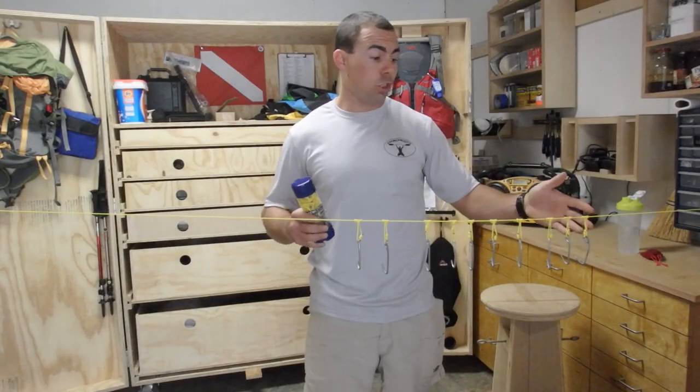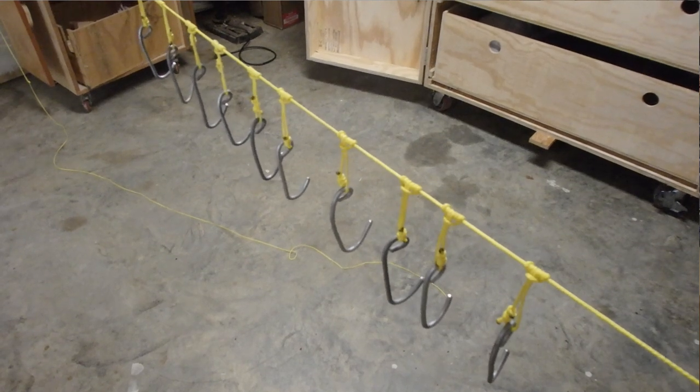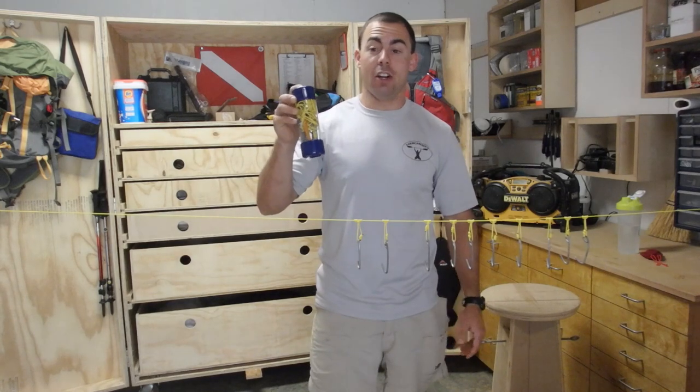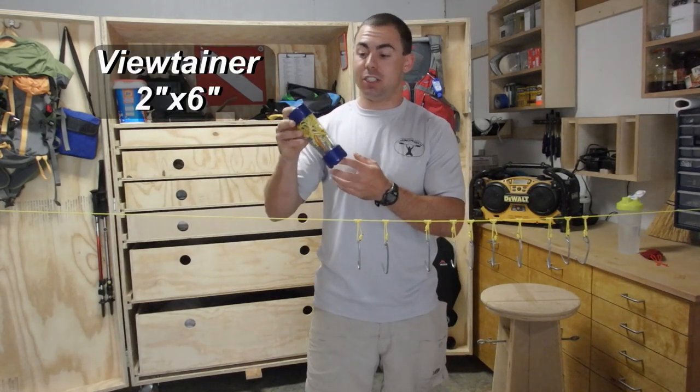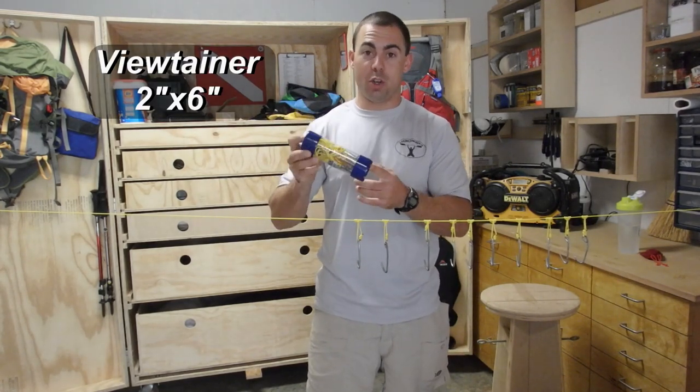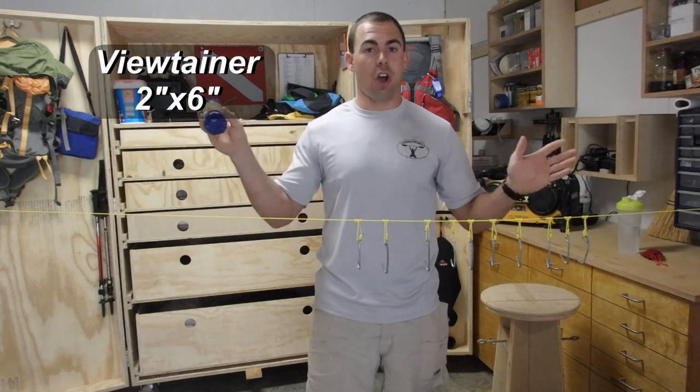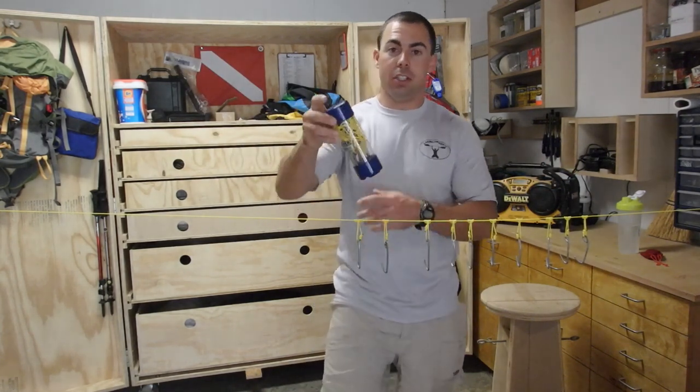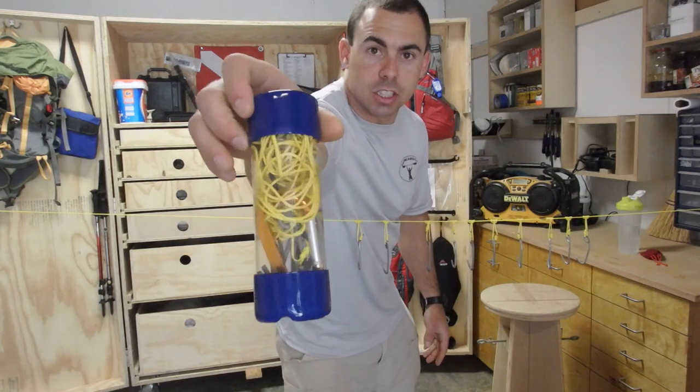Well there you have it. Once you have all your hooks attached you're pretty much done. All you need is something to keep it in. Now I like to keep mine in a view tainer. This is a two by six inch just really cool little container that's good for all kind of stuff. But it works really well for this gear hanger. You can see it all just fits in there nicely.